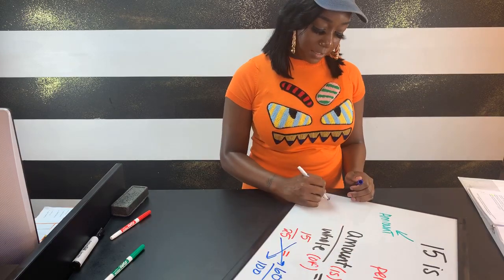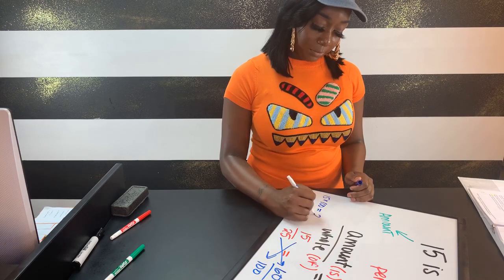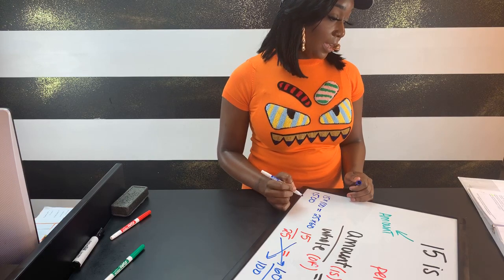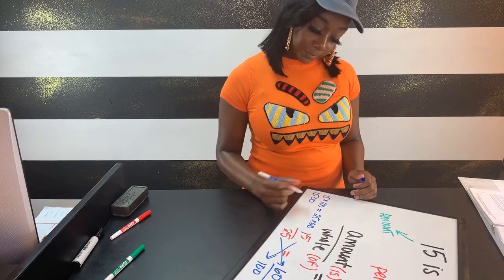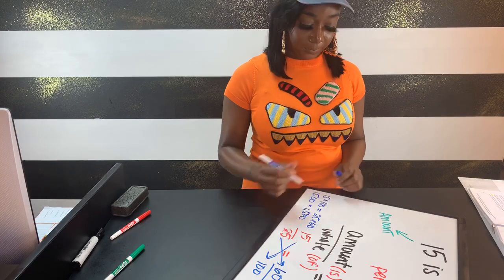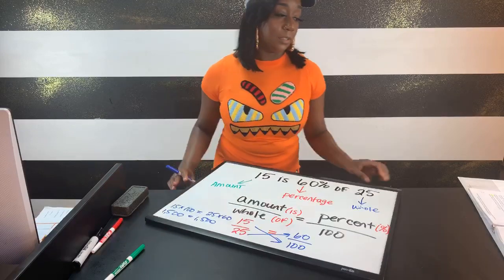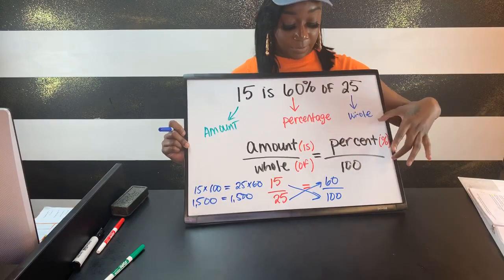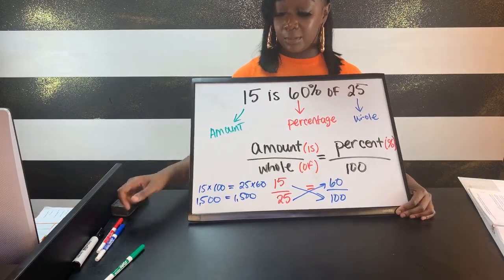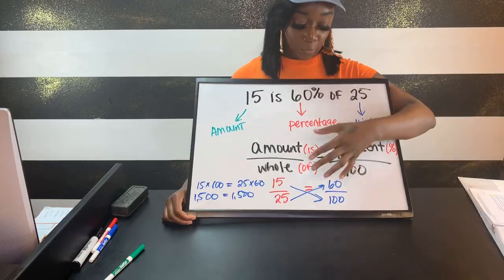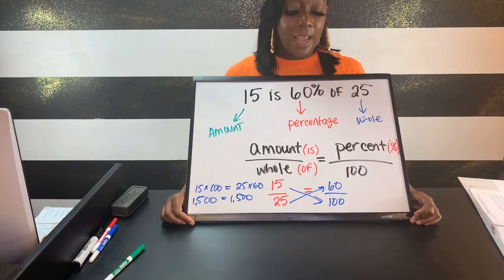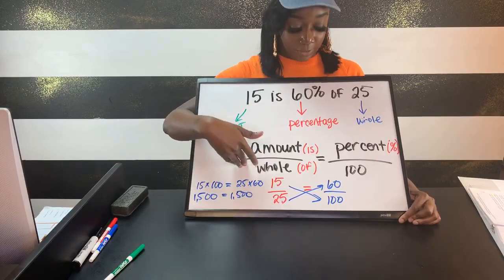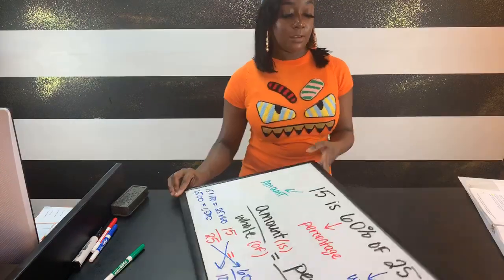We do 15 times 100 and check if it equals 25 times 60. 15 times 100 is 1,500, and 25 times 60 is also 1,500. This setup — amount over whole equals percent over 100 — you need to know, love, and memorize it. A really good tip: write this setup out every time. People who skip the setup and try to plug in automatically often struggle to retain what goes where.